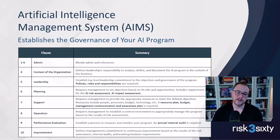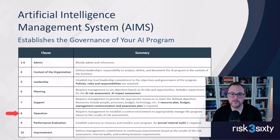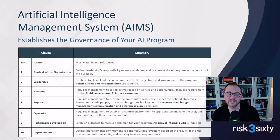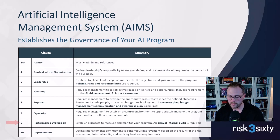Clause eight is operation, which largely references back to clause six planning. It references your risk assessment, your risk treatment plan, and how you're going to manage risk — so in some ways it's duplicative of clause six.